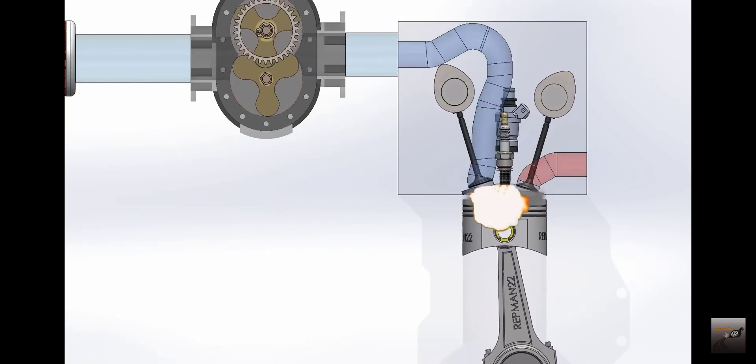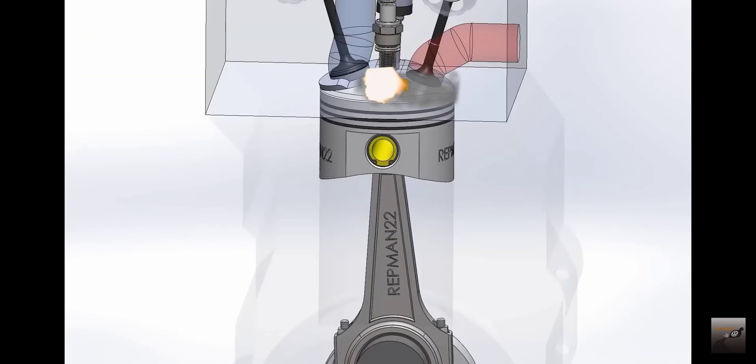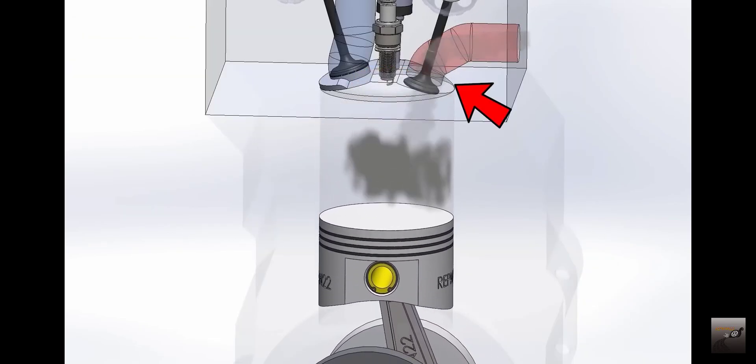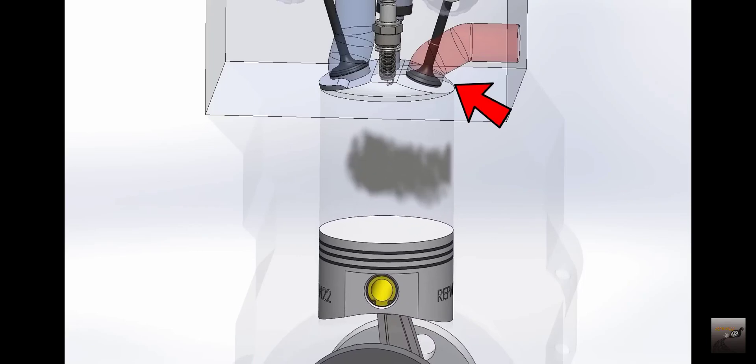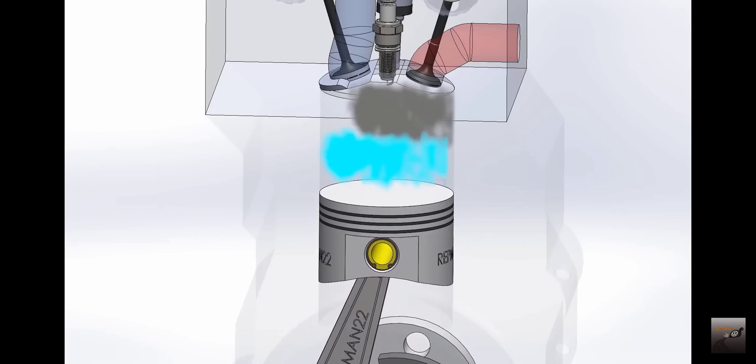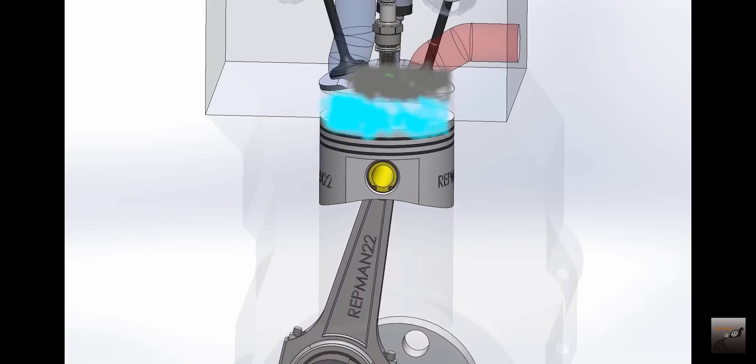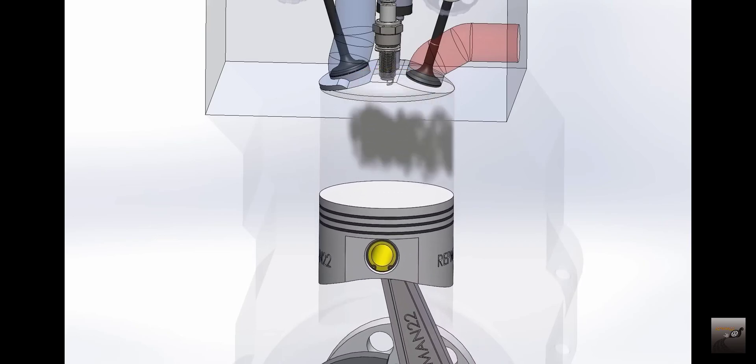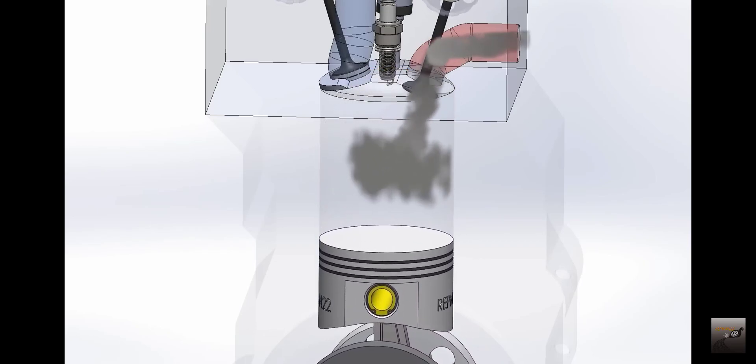The engine also incorporates additional technology, such as variable camshafts, which allows an EGR system. Under low-load conditions, the exhaust valve closes early and prevents exhaust gases from escaping. This exhaust gas stays in the cylinder, completing the volume and increasing compression, giving more power, reducing pumping losses, and keeping compression high.